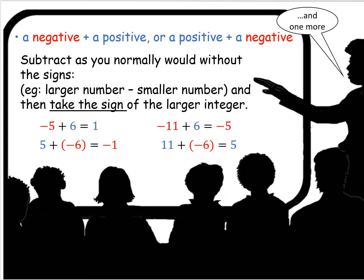You go back to the original problem and ask which of those numbers is the higher value, and what is its sign. Six is the bigger number and its sign is positive, so negative five plus six is positive one. Five plus negative six is negative one — subtract six minus five to get one, but this time the answer is negative because the bigger number, six, is negative in the original problem.